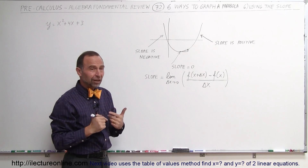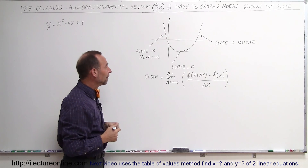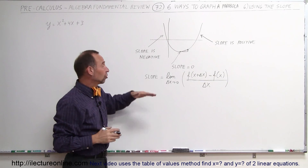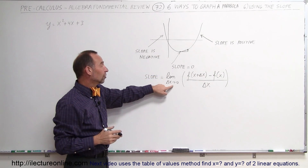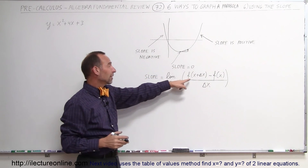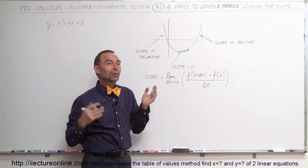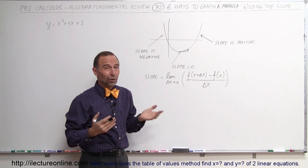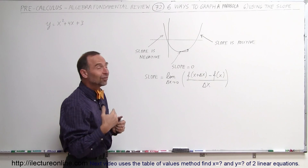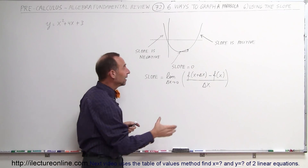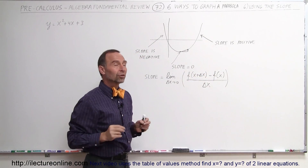Then we find the vertex and at that point we can graph the parabola. By definition, the slope is equal to the limit as delta x goes to zero of f of x plus delta x minus f of x, divided by delta x. This is basically the rise over the run between two points on the graph.